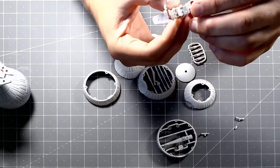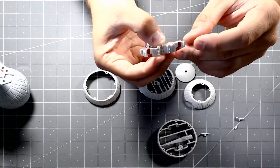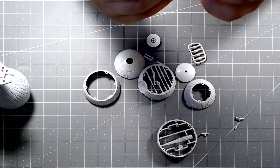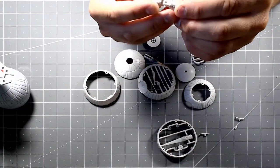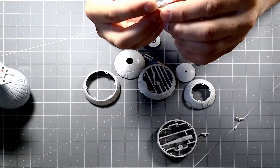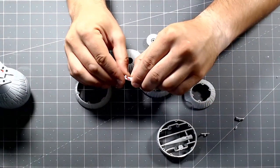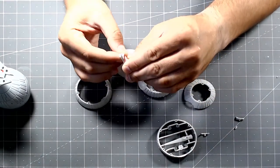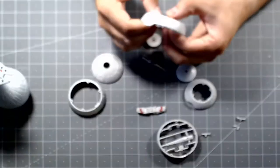There's a term called poka-yoke and it basically means parts can only be installed one way. You can't mess them up. They have these tiny little pins and certain little clocking features so you can only assemble it the correct way, which means they don't really need instructions because it's pretty self-explanatory.